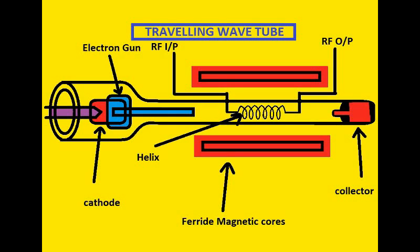Welcome to Electronics to the Point. In this video we will see the working of traveling wave tubes. Traveling wave tubes are nothing but slow wave structures. We shall see firstly why we have to use slow wave structures.